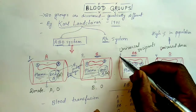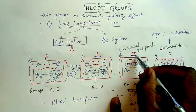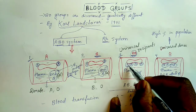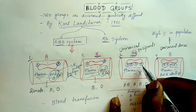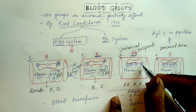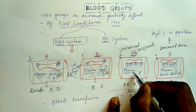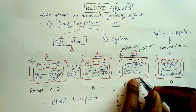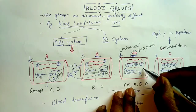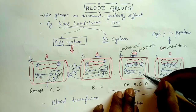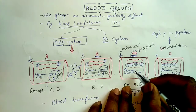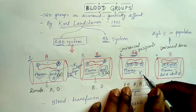Now we will see the third person who has AB blood group. In the RBC of this person both antigens are present — A and B. Because both antigens are present, there will be no antibody in the plasma. If there were anti-A, it would react with A antigen and destroy the RBC, or if there were anti-B it would react with B antigen. So in AB blood group, there is no antibody in plasma.